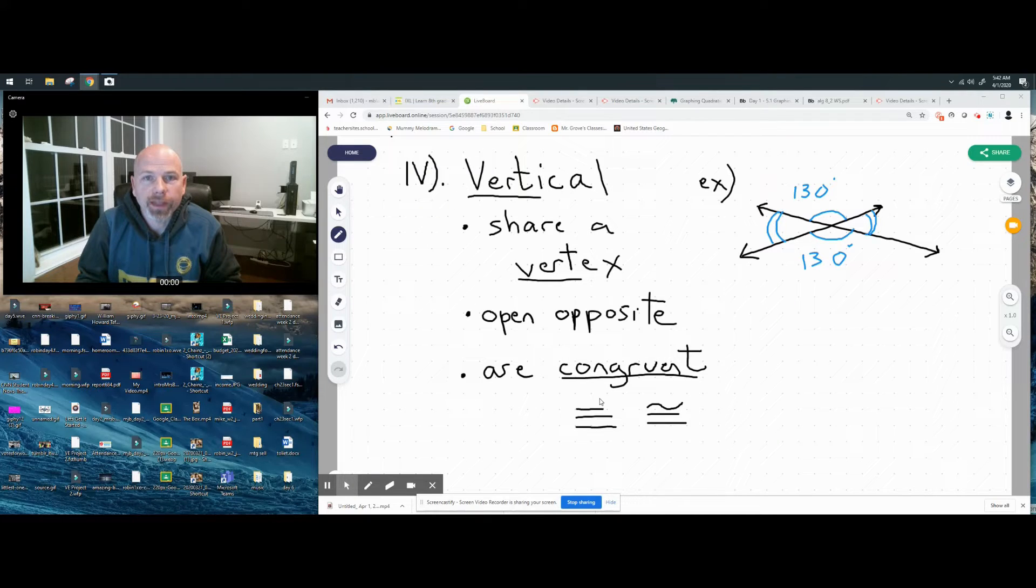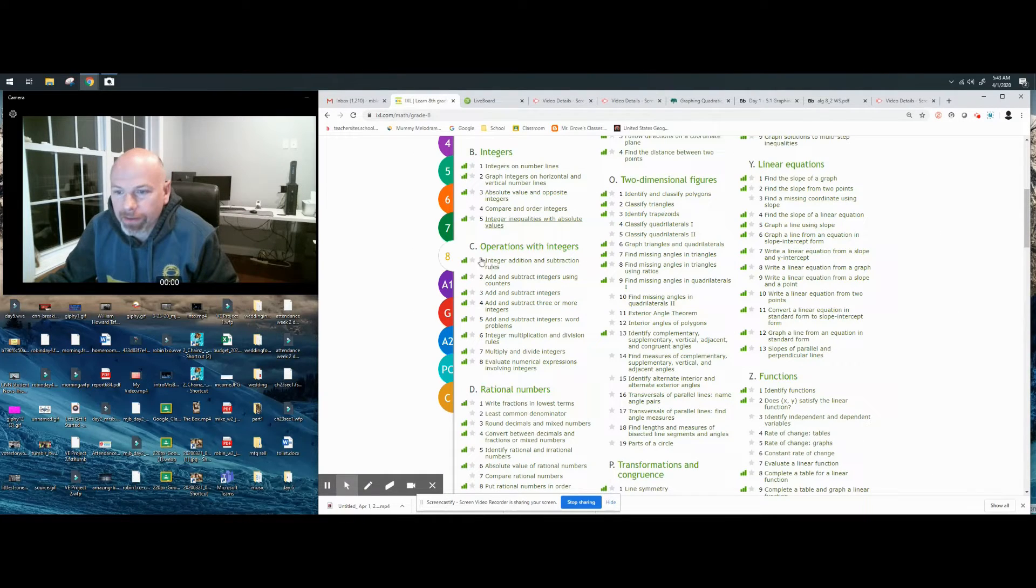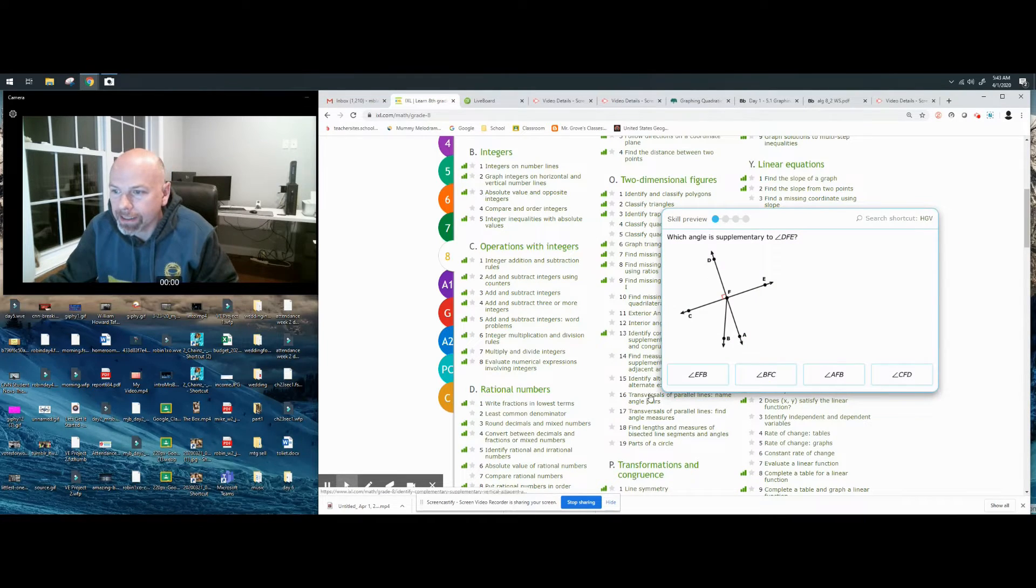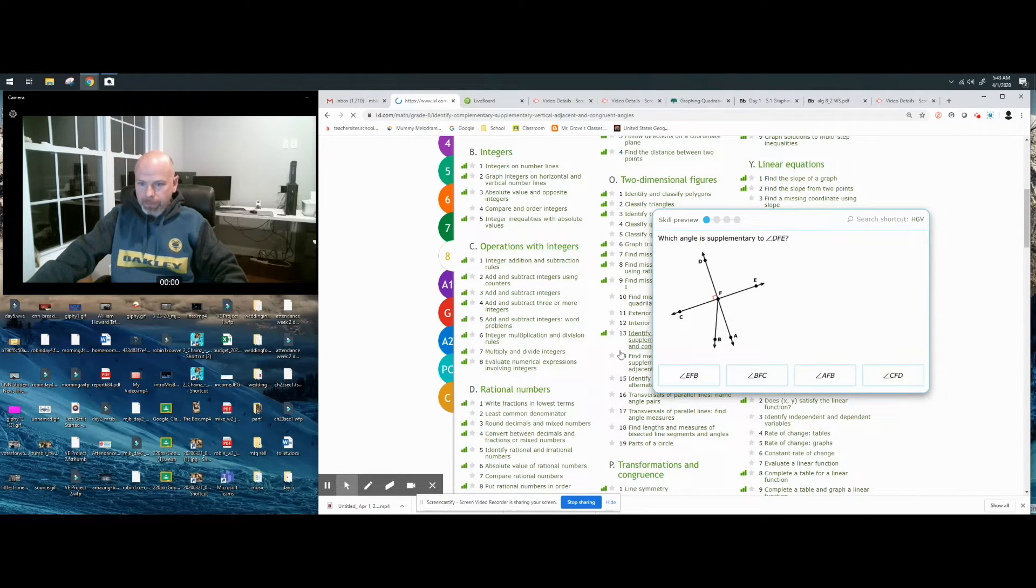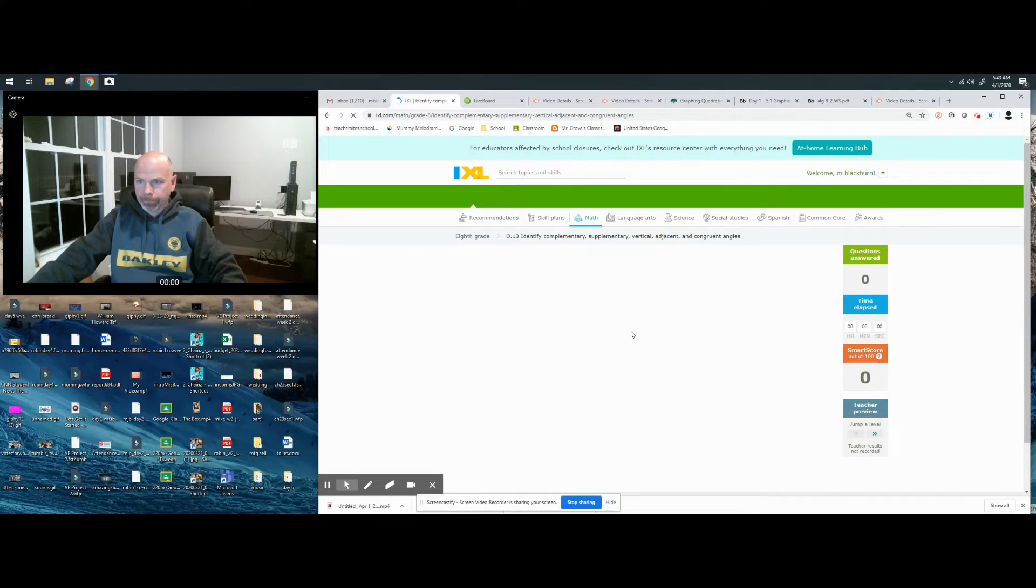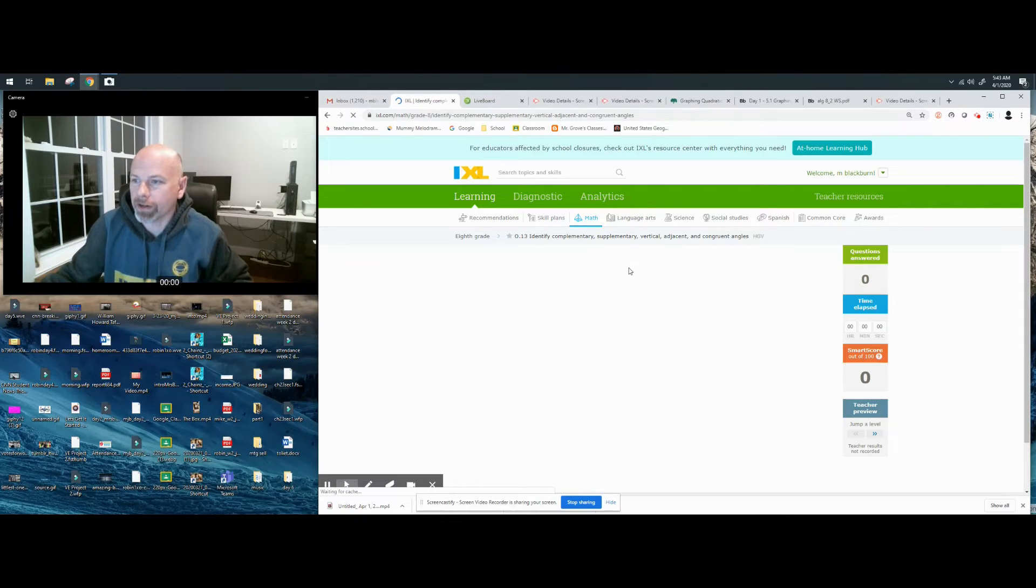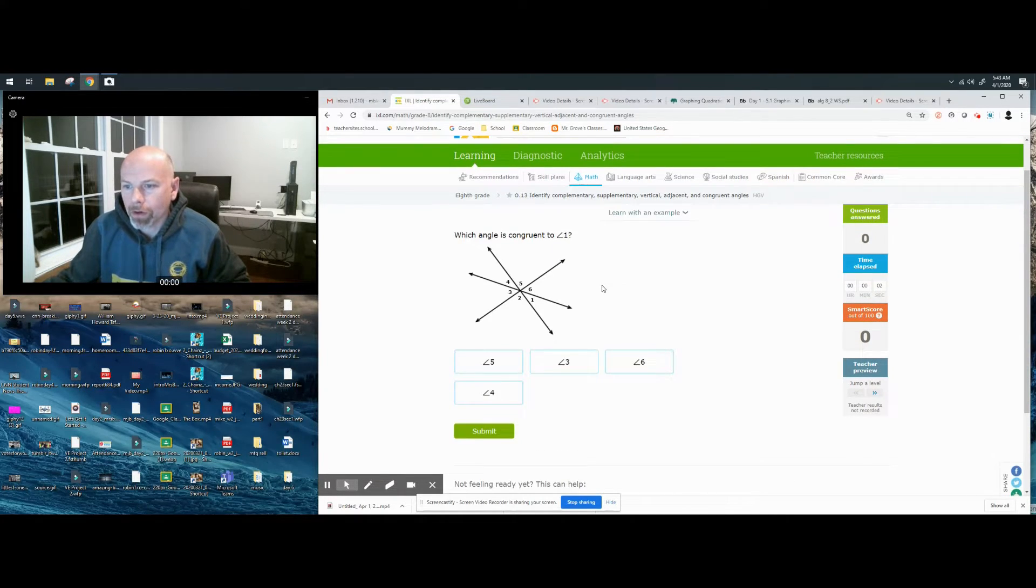Let's take a look at some example problems that we'll see in IXL in our practice. If I go to IXL, I can click on the eighth-grade math skills, and we're looking at skills O13 and O14. Click on O13. What do we have to do here? Identify complementary, supplementary, vertical angle, and adjacent.